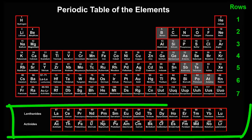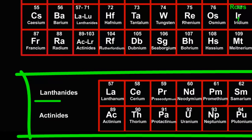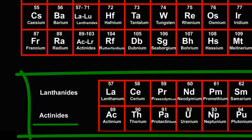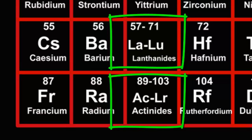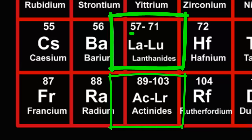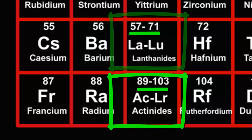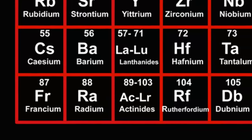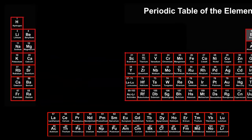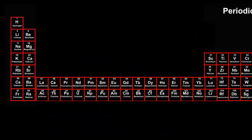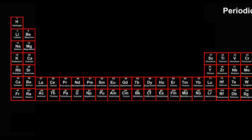What about these rows down below, called the lanthanides and actinides? Well, they really belong to rows 6 and 7, and should slot into these spaces. The lanthanides are elements 57 to 71, and the actinides are elements 89 to 103. To slot them in, we have to make the periodic table wider. This full table is more accurate, and some versions are printed this way.